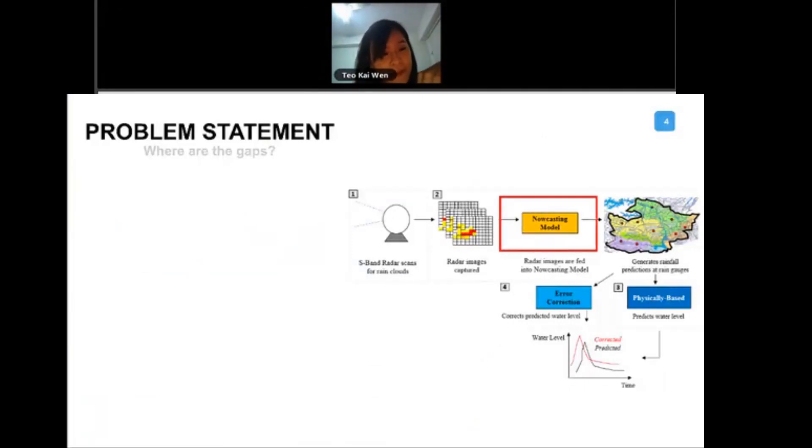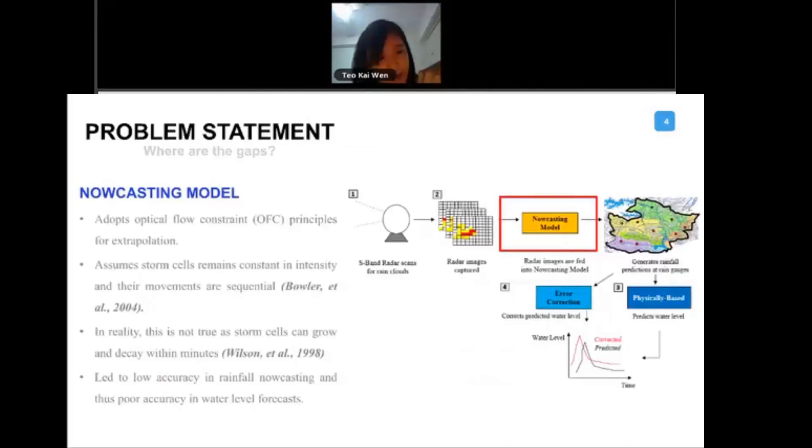What this nowcast model does is it will take in all your radar images and then extrapolate them into future radar images. Then you will translate them into future rainfall predictions.